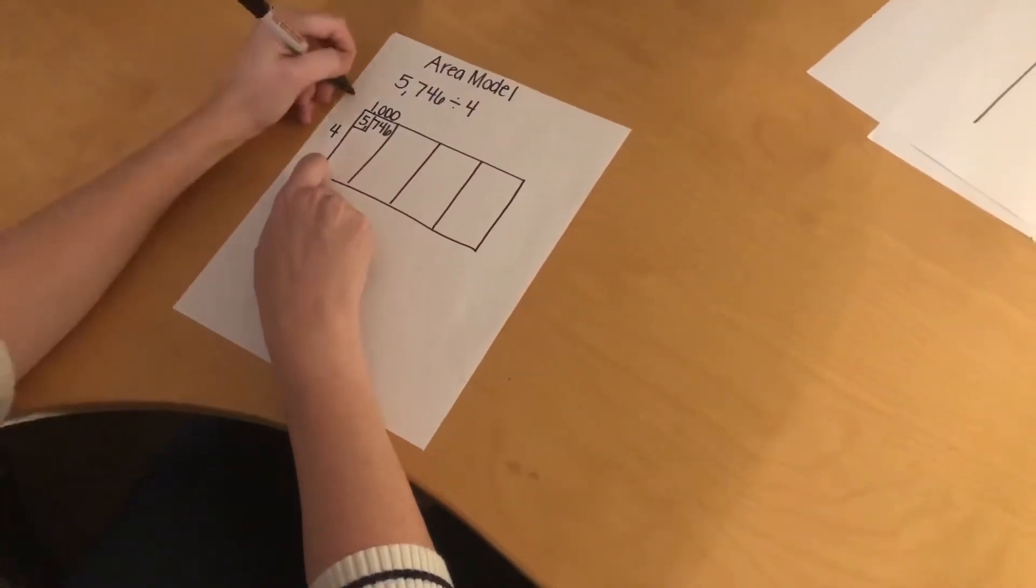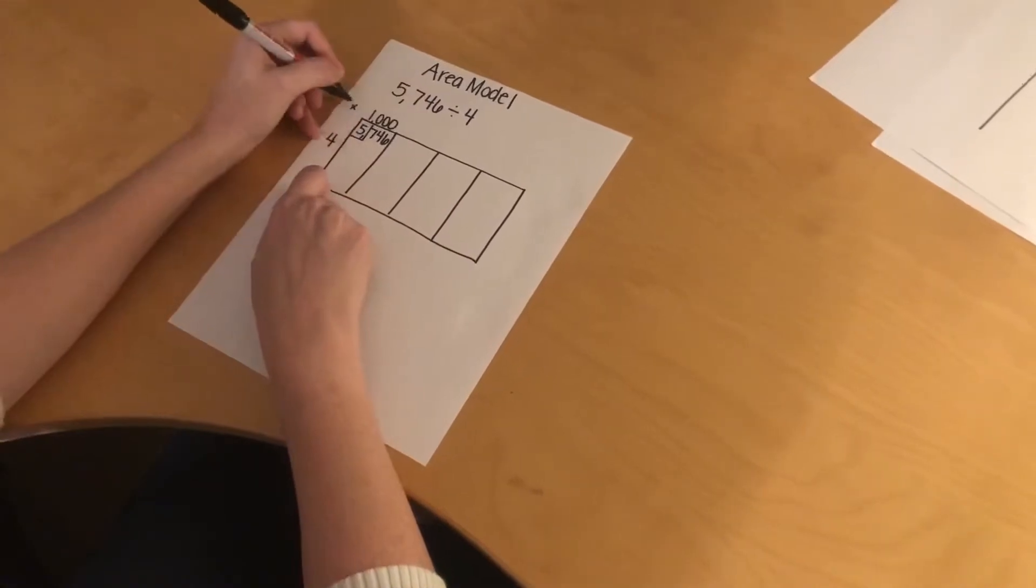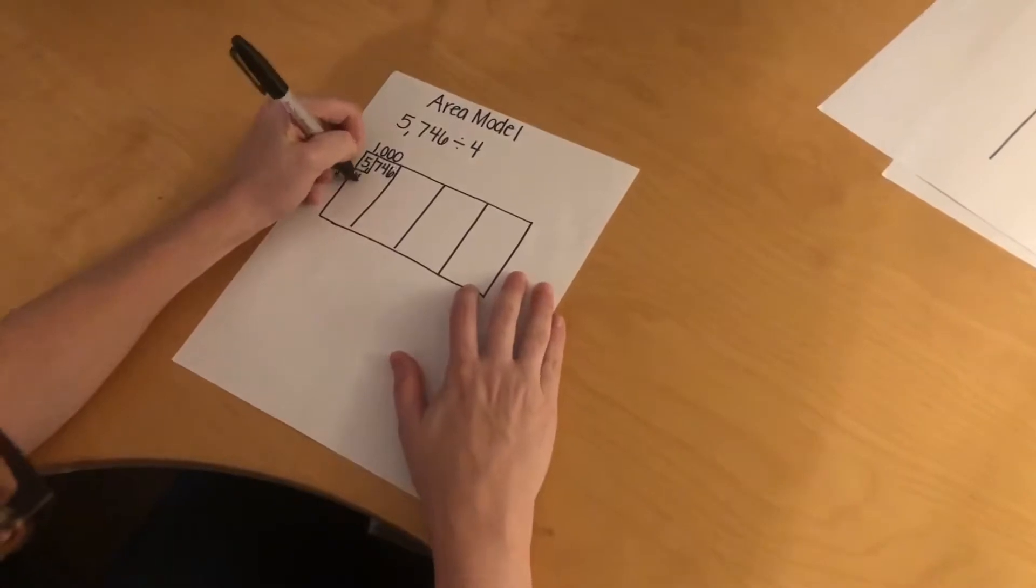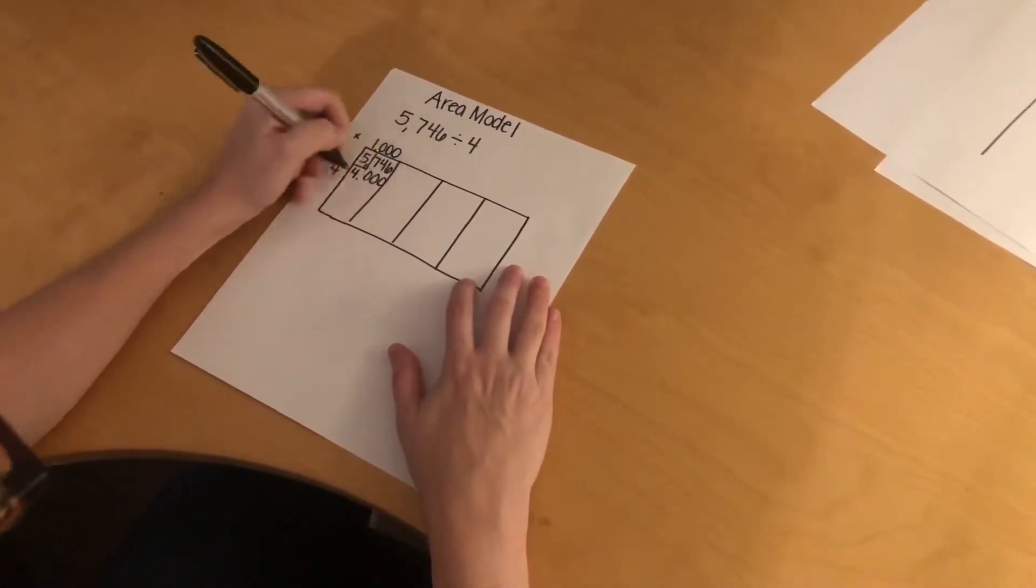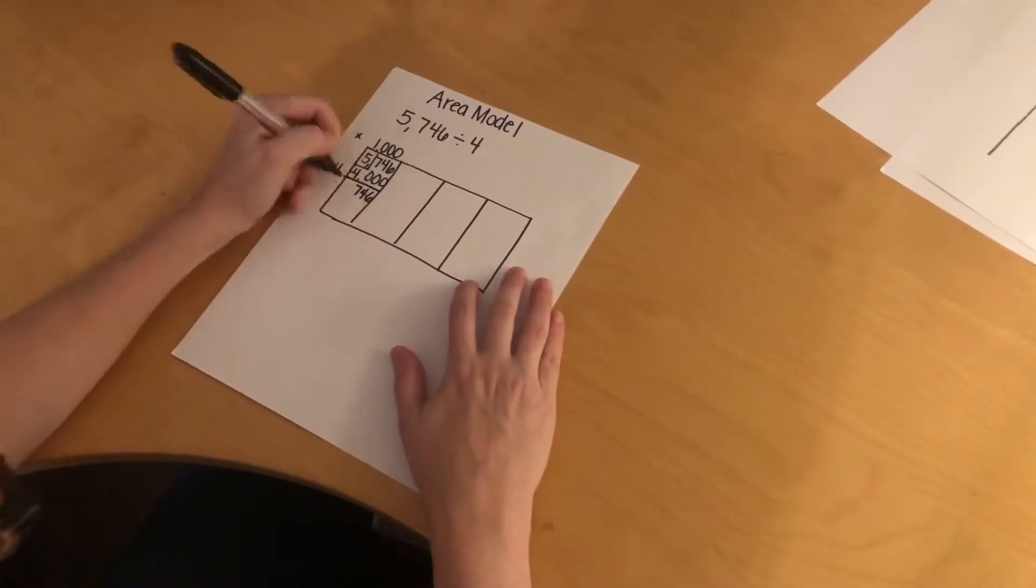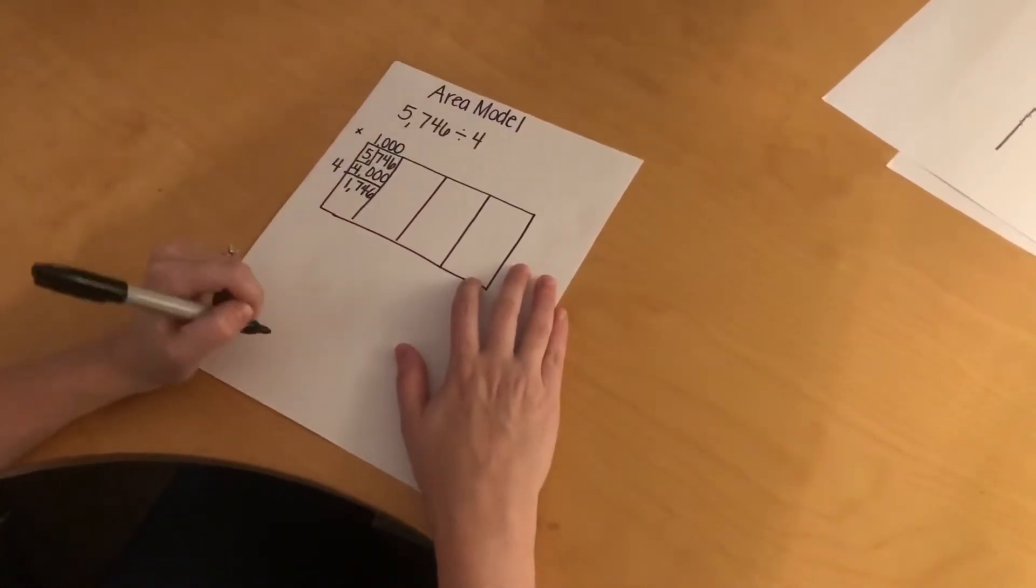My next step is to multiply. I'm going to multiply this 1,000 times my divisor of 4. So 1,000 times 4 is 4,000. Then I need to subtract. And I get 1,746.